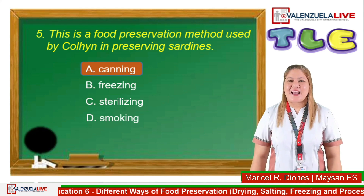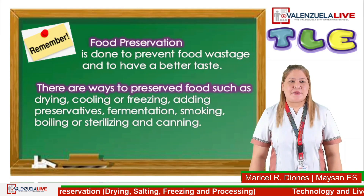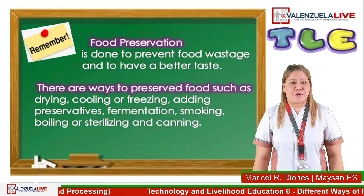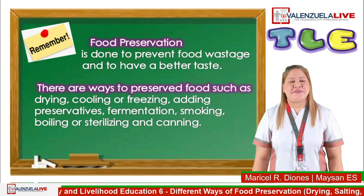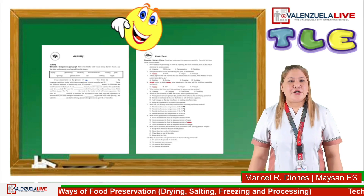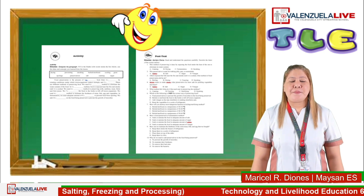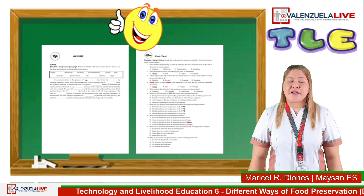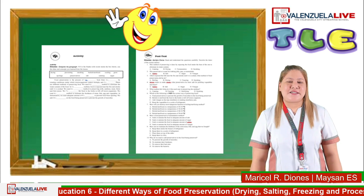I am glad that we finished our activity, and you really did a great job, learners. Always remember: food preservation is done to prevent food wastage and to have a better taste. There are ways to preserve food such as drying, cooling or freezing, adding preservatives, fermentation, smoking, boiling or sterilizing, and canning. For your assignment, you may start answering the activity on page 23 and post-test on pages 24 and 25 of your DLE module, with the guidance of your teacher, parents, or guardians. Your subject teacher will check your answers tomorrow.